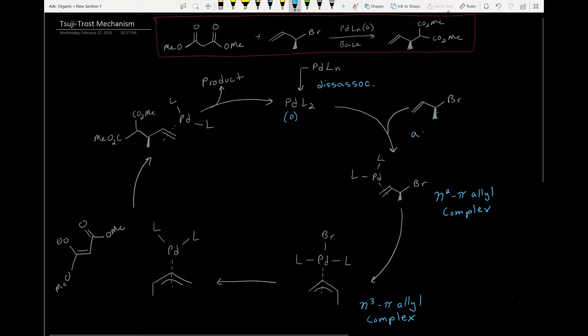Then we're going to do an association with the allylic compound with bromine leaving group. This palladium is only associated with these two carbons right now, so it forms an eta-2 pi-allyl complex, and then we're going to do an oxidative addition to form an eta-3 pi-allyl complex, where the palladium is associated with all three of these carbons, and the bromine has been added up here.